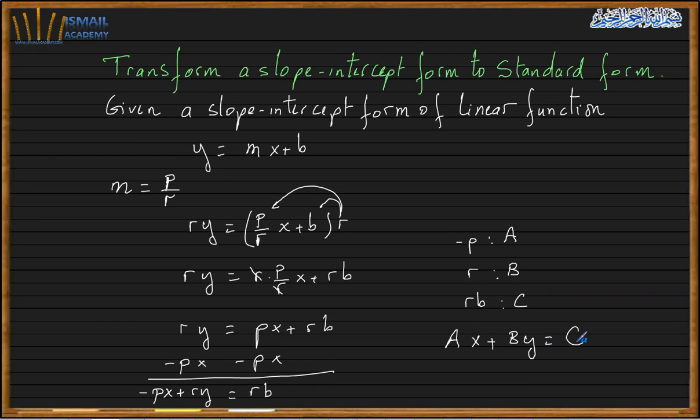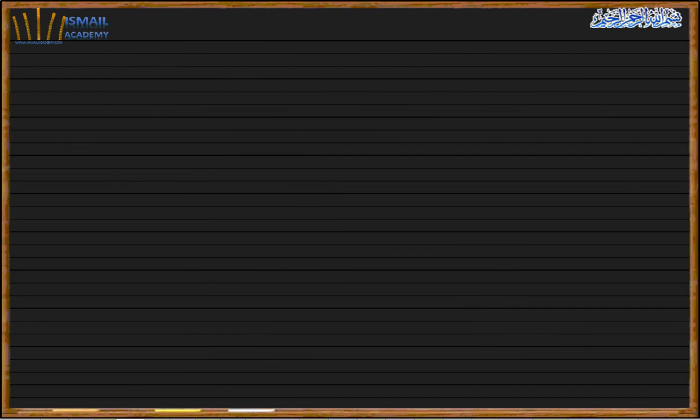So here my minus p is my a coefficient. Ax plus By equals C. This is the standard form. So let me show you this in an example.